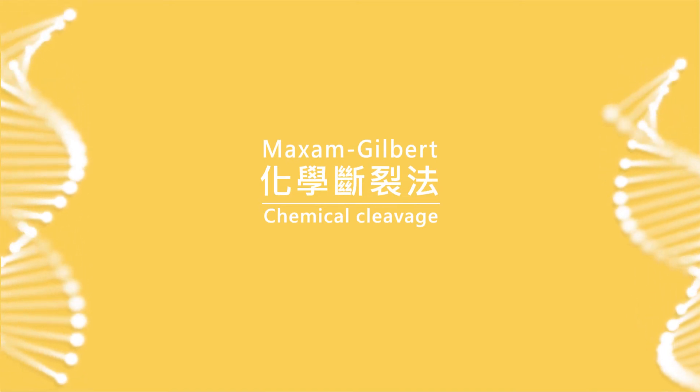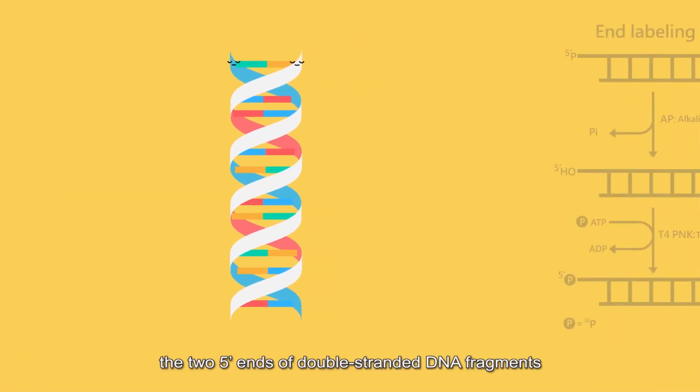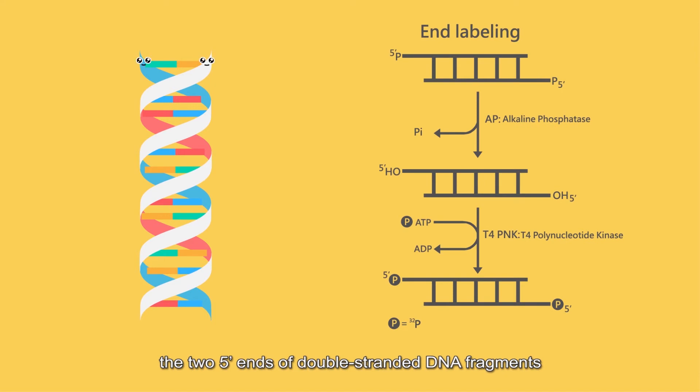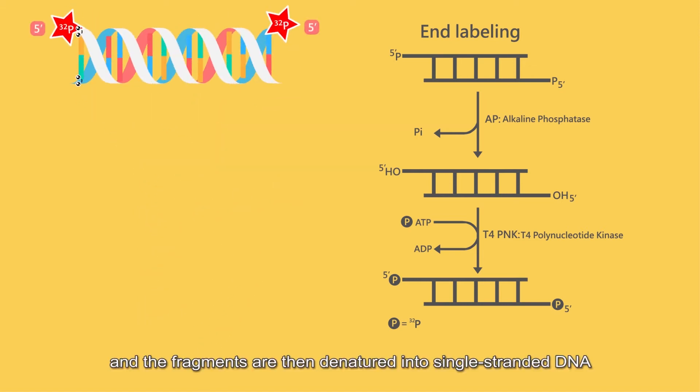Maxim-Gilbert chemical cleavage method: In this method, the two five prime ends of double-stranded DNA fragments are labeled with radioactive phosphorus-32, and the fragments are then denatured into single-stranded DNA.